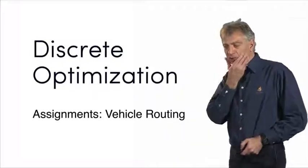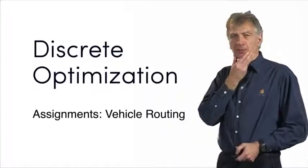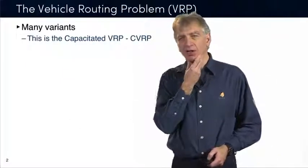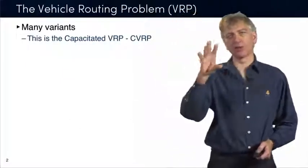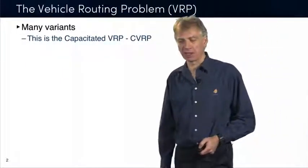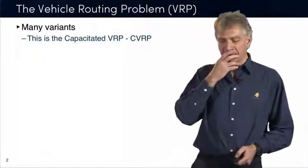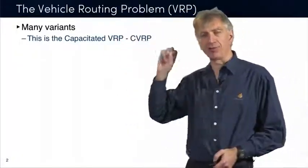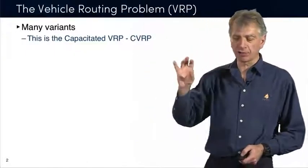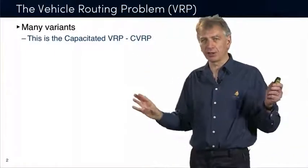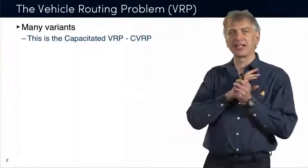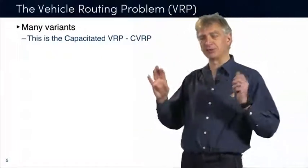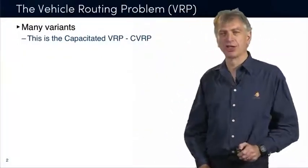I want to cover the vehicle routing assignment for the discrete optimization class. The vehicle routing problem is one of the most fascinating problems. It's a beautiful research area. It's very applicable in practice. There are a lot of practical applications. There are many variants. People have spent their lives working on these things. This is one of the areas of optimization that I like the most.